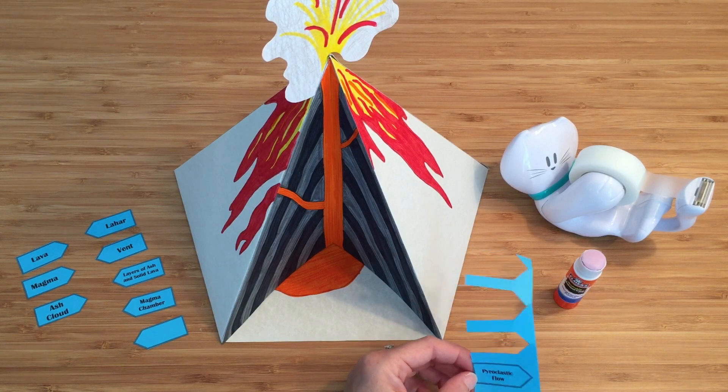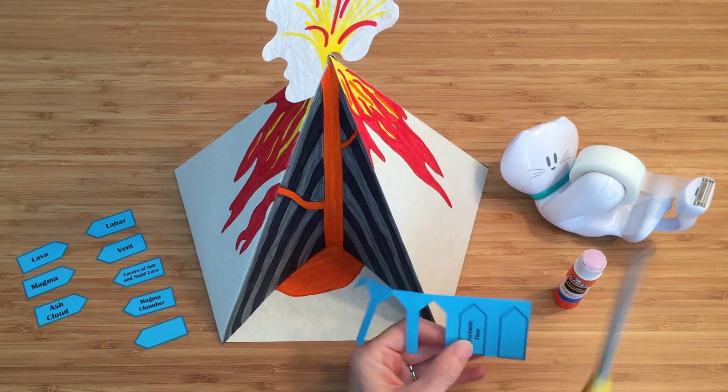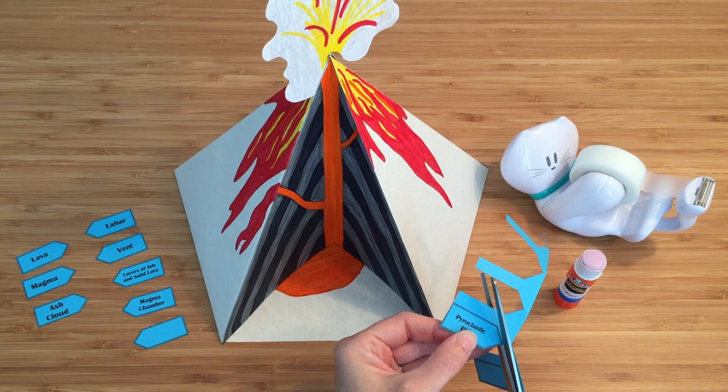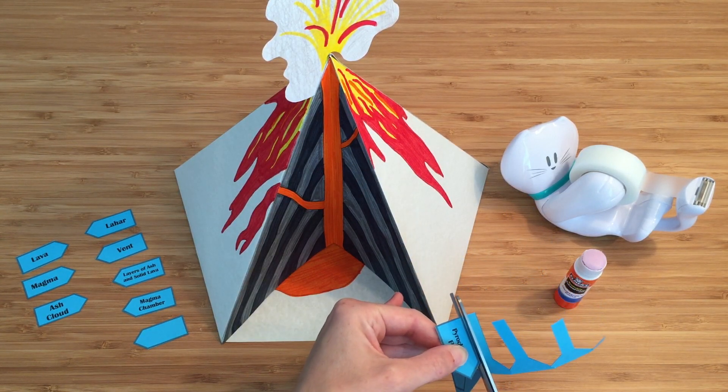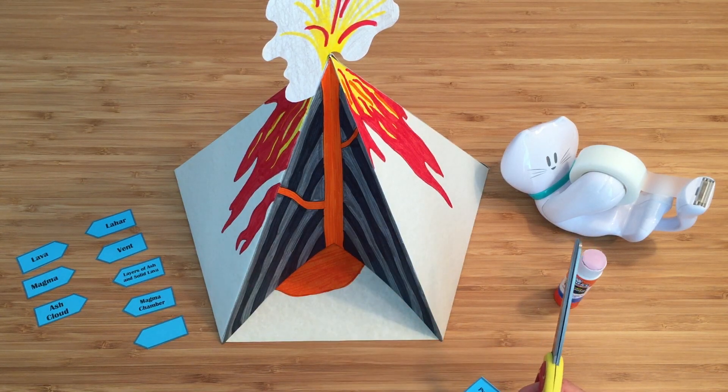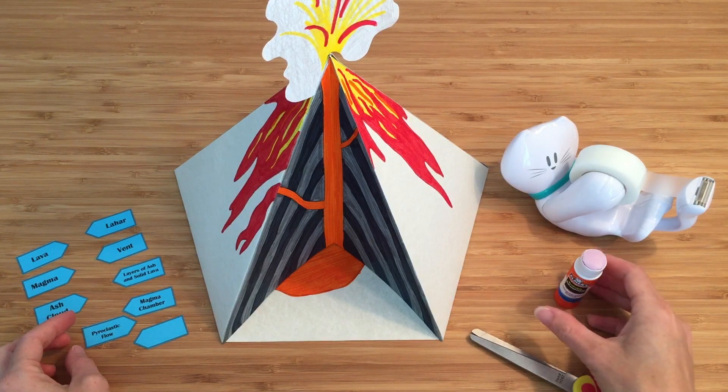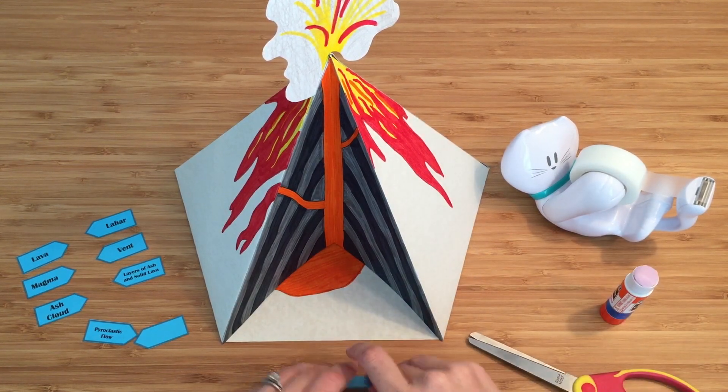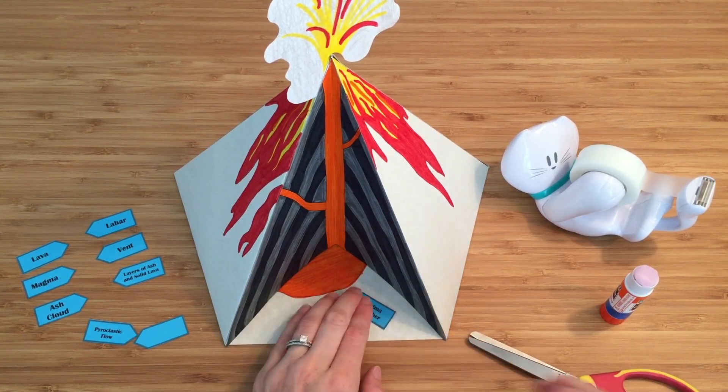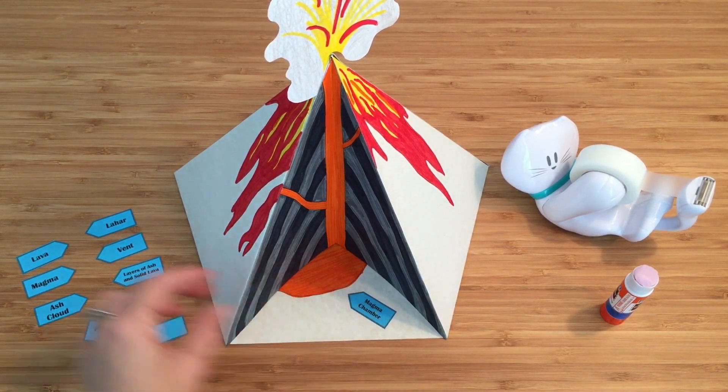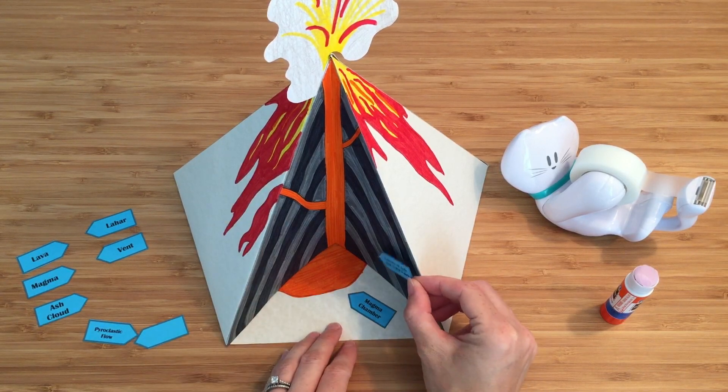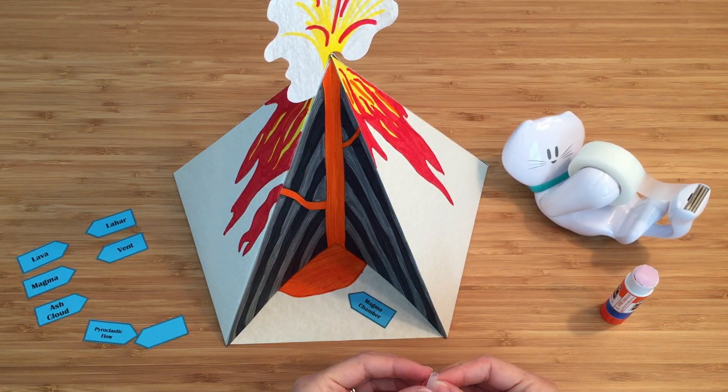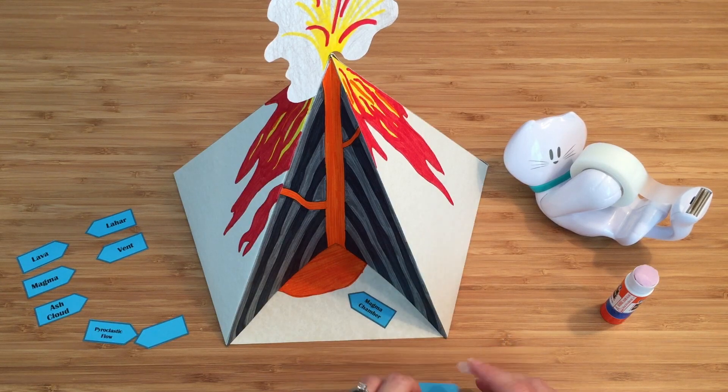The last thing I have for you today is the labels. If you'd like to label the parts of your volcano, you can go ahead and cut out the labels. There's no dash line. You'll just cut around the edge of them. And I included a couple of blank labels so if there's something that you want a different name for or you want to label that I didn't make a label for, you can do that. So labels can be glued or taped on there. So here is my magma chamber. Layers of ash and solid lava. I'm going to try taping that one on there. So if you want to tape, just make a little circle of overlapped tape and press it on the back.